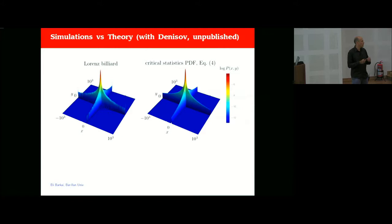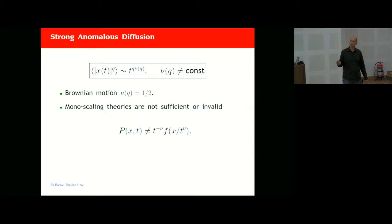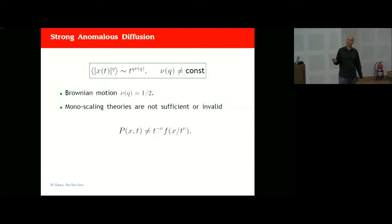We have a theory for this which is in progress, but I'll describe a caricature of this dynamics based on a stochastic model. A well-used method to analyze typical and rare fluctuations is using the moments of the diffusive process. One defines the absolute value of the q-th moment of the process in one dimension, and looks at its long-time t-dependence, which goes like t to some power ν(q).